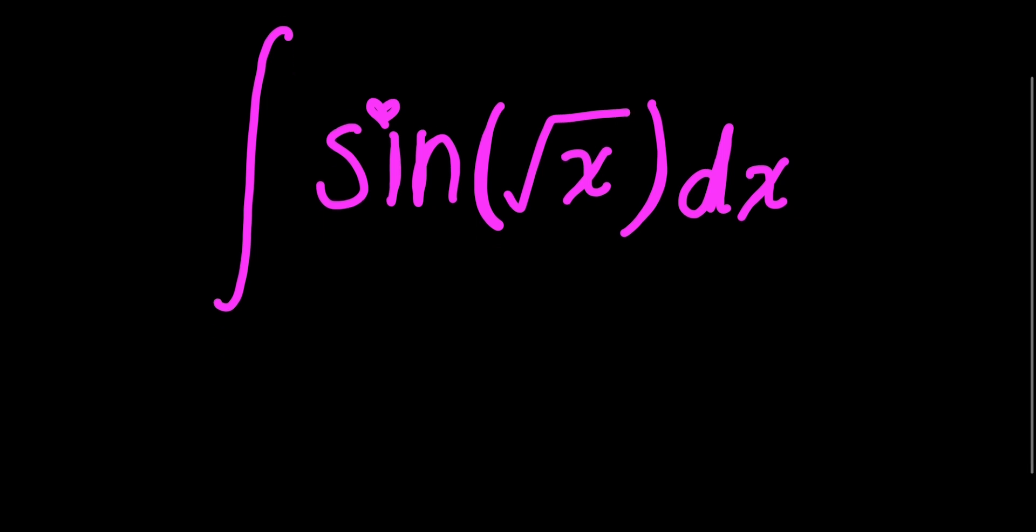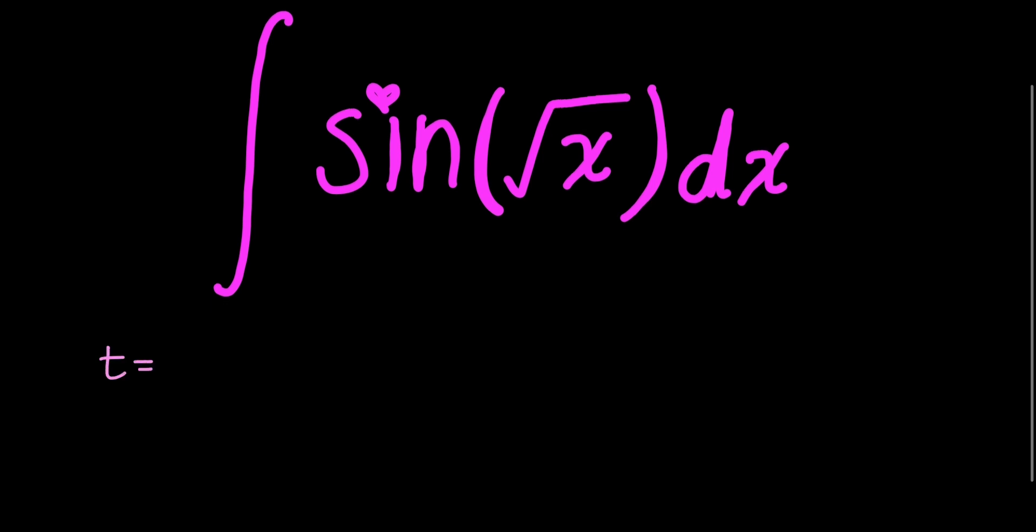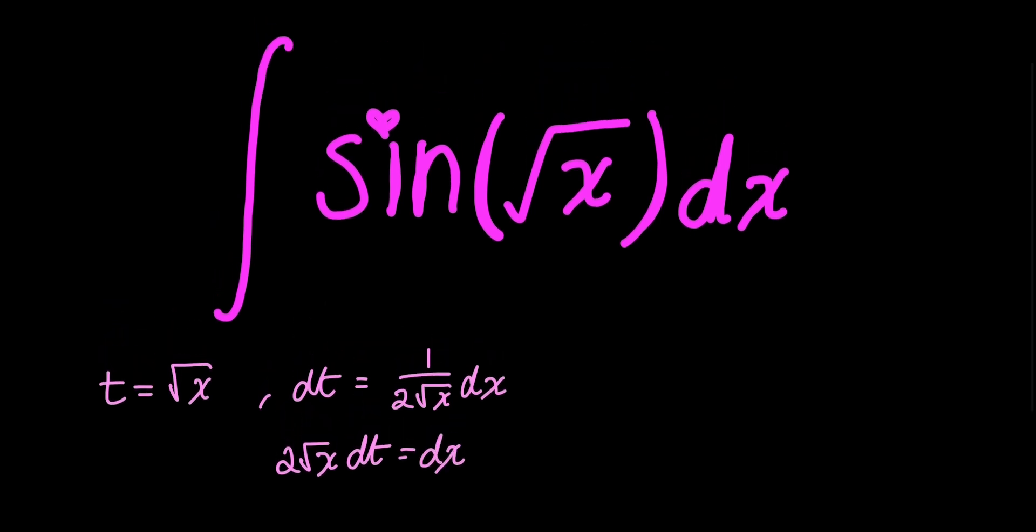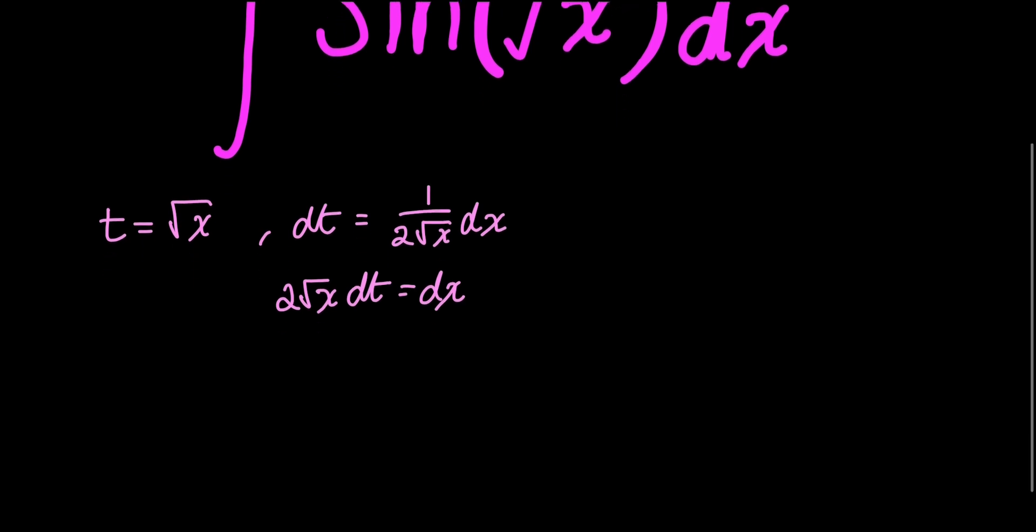I'll define a variable t equals root x, and so dt equals 1 over 2 root x dx. When I multiply 2 root x to both sides, I get 2 root x dt equals dx. This is so I can match what I have in my original integral. And I've already defined root x as t, so I'd have 2t dt equals dx.